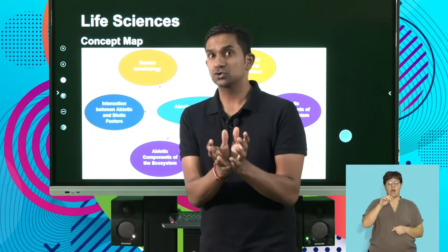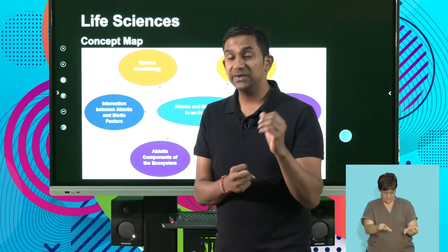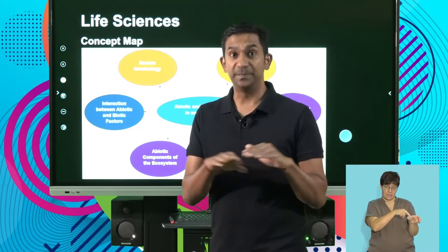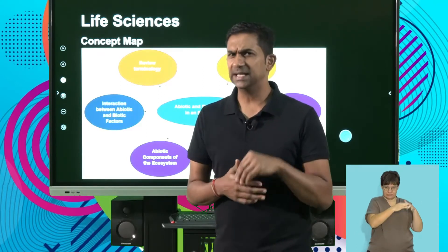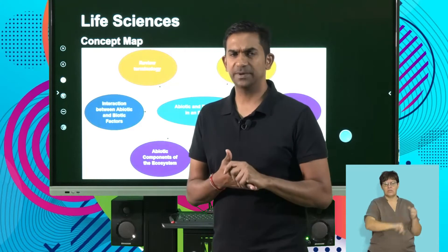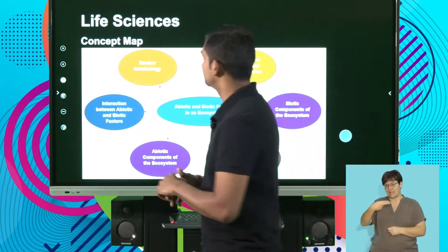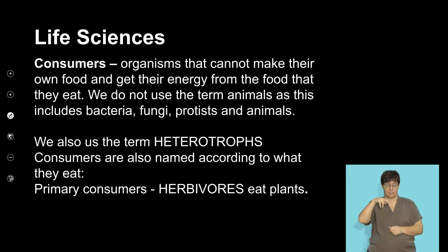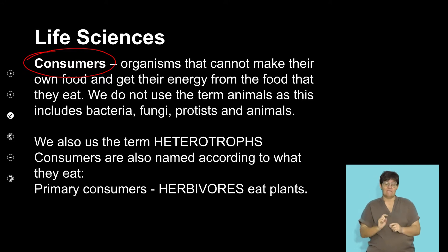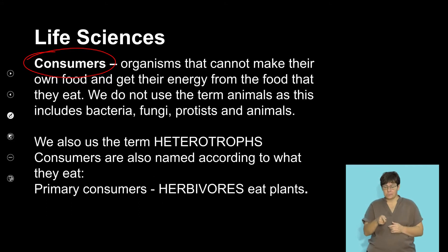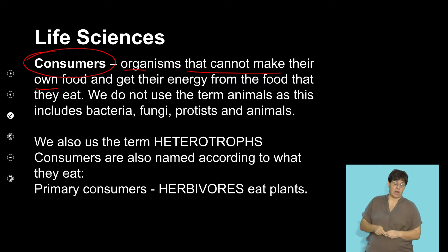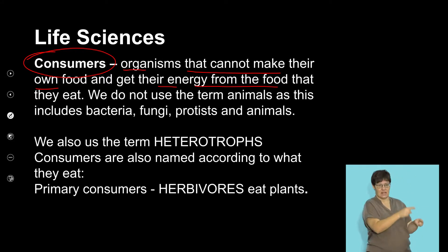Autotrophs are your first group of biotic components. It's important that we recognize that autotrophs form the basis of any food chain. Looking at the next group called heterotrophs: these are groups of individuals, the first of which are the consumers. Consumers are organisms that cannot manufacture their own food, and they rely on energy from the food that they eat.